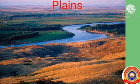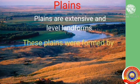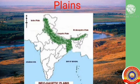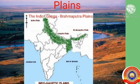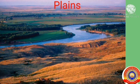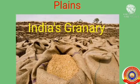Plains are extensive and level landforms. There is a vast, expansive plain to the south of the Himalayan mountain ranges. These plains were formed by the deposition of alluvium brought down by the rivers originating from the Himalayas, and are known as the Indo-Ganga-Brahmaputra plains. Crops such as paddy, wheat, maize, and sugarcane are cultivated in these fertile plains. Hence, this region is also referred to as India's granary.